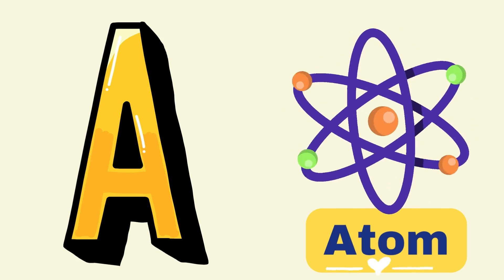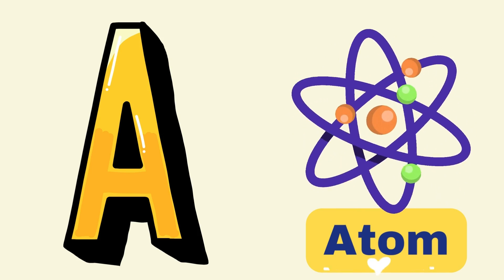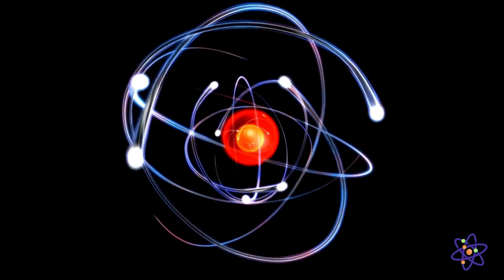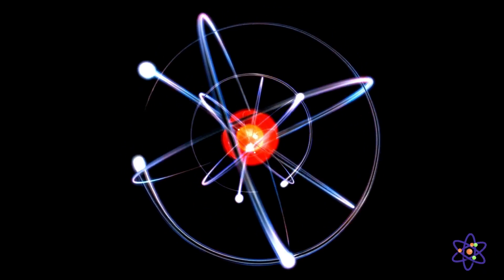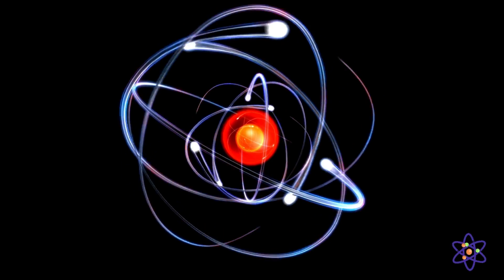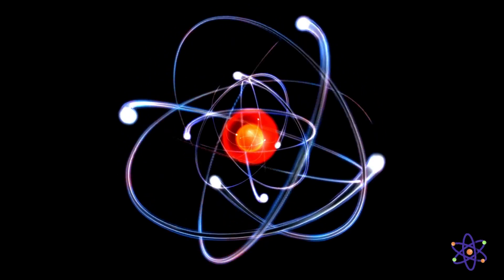A for Atom. An atom is a tiny building block of everything around us. It is so small that you cannot see it with your eyes, but it's what makes up all the different things you see in the world.